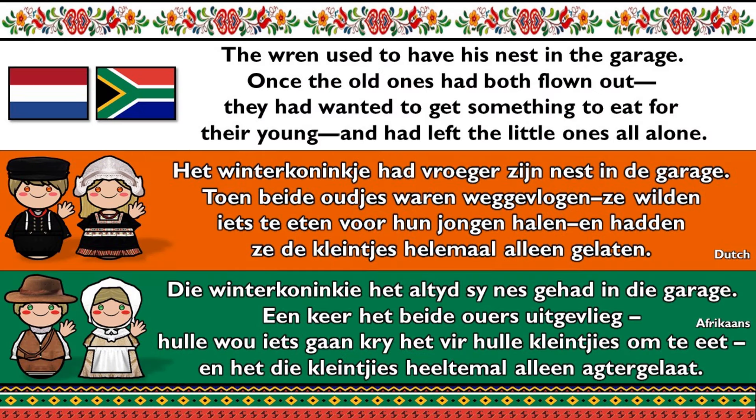Het winterkoninkje had vroeger zijn nest in de garage. Toen beide oudjes waren weggevlogen, wilde ze iets eten voor een jongen halen, en hadden ze de kleintjes helemaal alleen gelaten. Die winterkoninkje het altijd zijn nest gehad in die garage. Een keer het beide ouers uitgevlieg, hulle hebben iets gaan krijg het vir hulle kleintjes om te eet, en het die kleintjes helemaal alleen achtergelat.